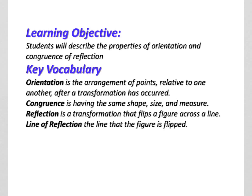So key vocabulary is orientation. Orientation is the arrangement of the points relative to one another after the transformation has occurred. Congruency is having the same shape, size, and measure.